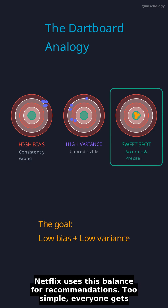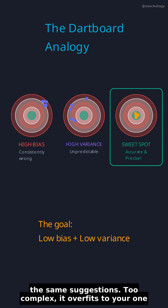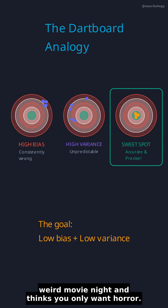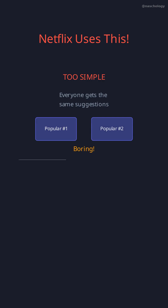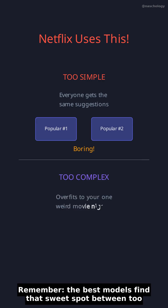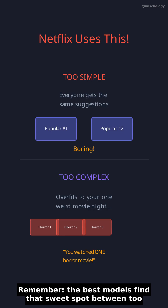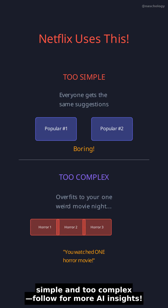Netflix uses this balance for recommendations. Too simple, everyone gets the same suggestions. Too complex, it overfits to your one weird movie night and thinks you only want horror. The best models find that sweet spot between too simple and too complex.